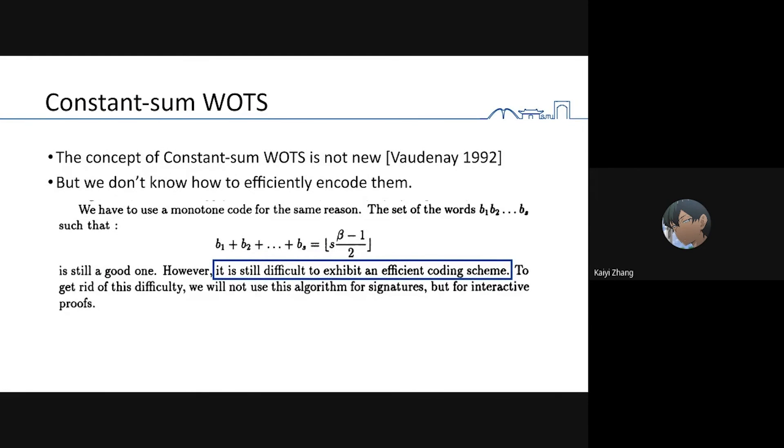Actually the concept of constant sum is not new. Winternitz discovered it in the 1990s, but at that time we didn't know how to efficiently encode them. It means we need a polynomial time or practically efficient encoding algorithm to encode the message from a binary string to constant sum space.